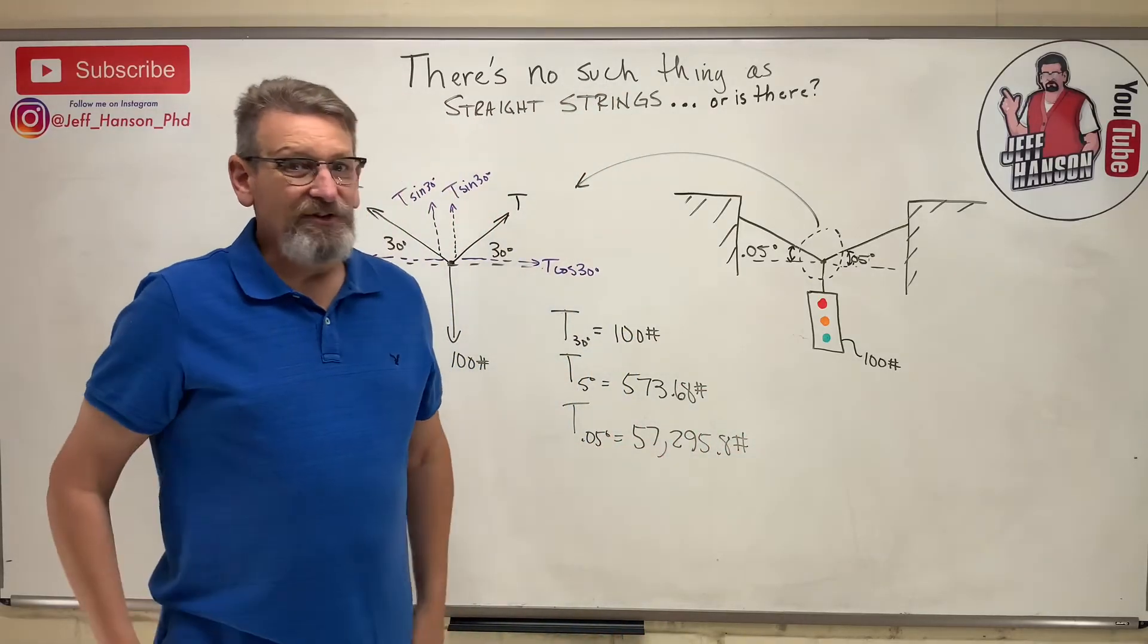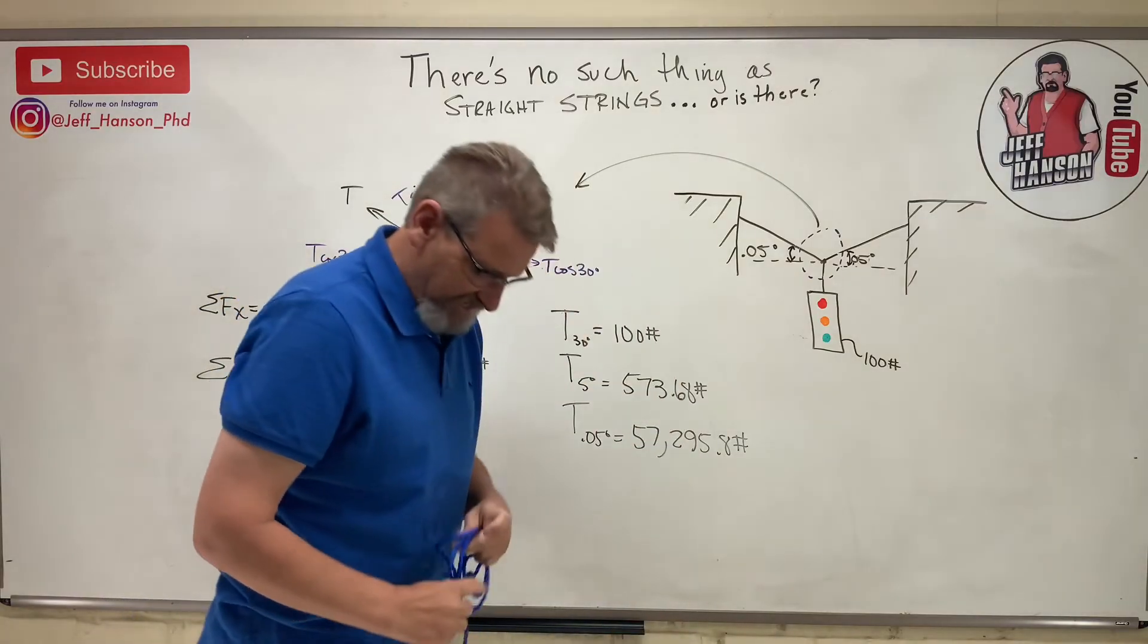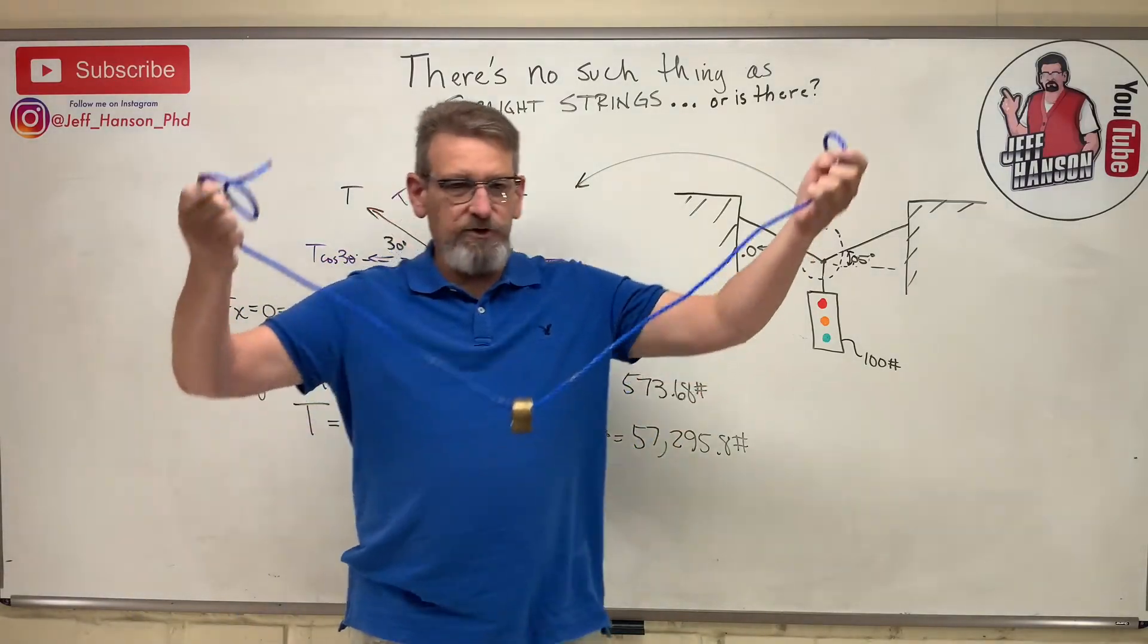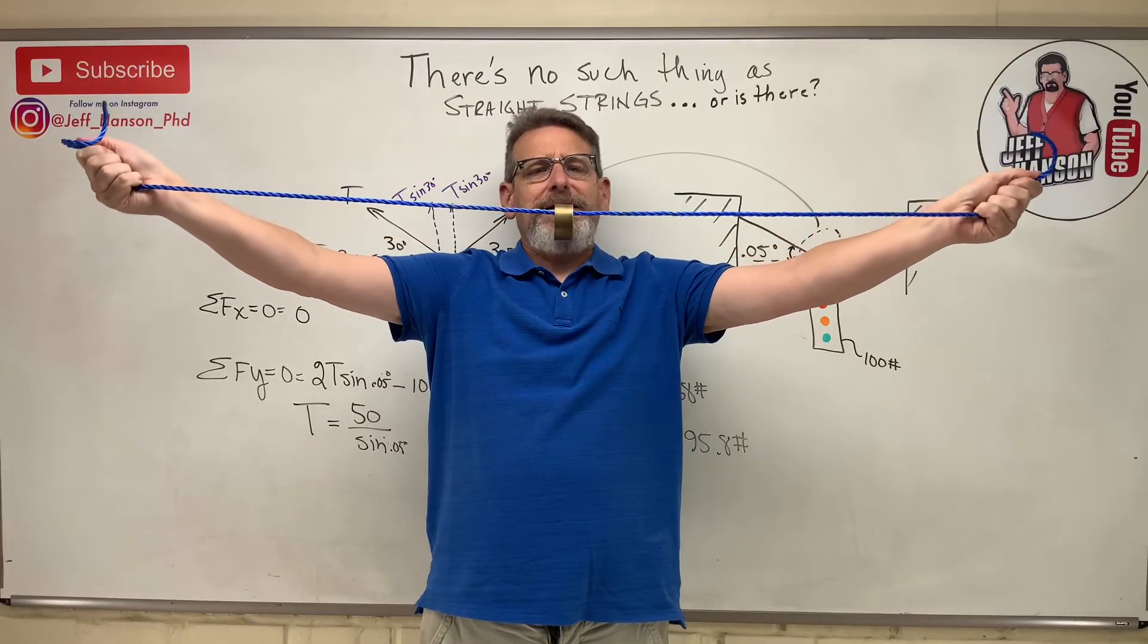Here's my question for you. You can see this right here. Here's a weight, there's your traffic light. As I start pulling on that, I'm pulling on that pretty hard right there. You can still see a little droop in that, can't you?